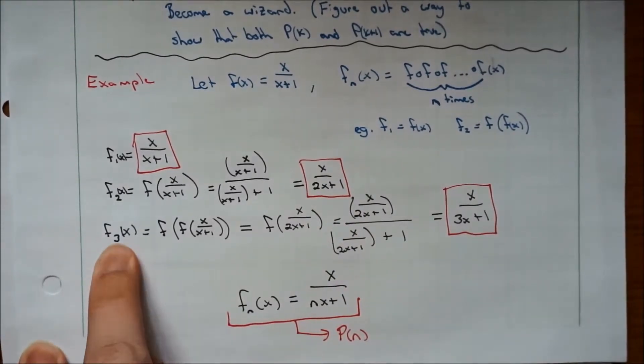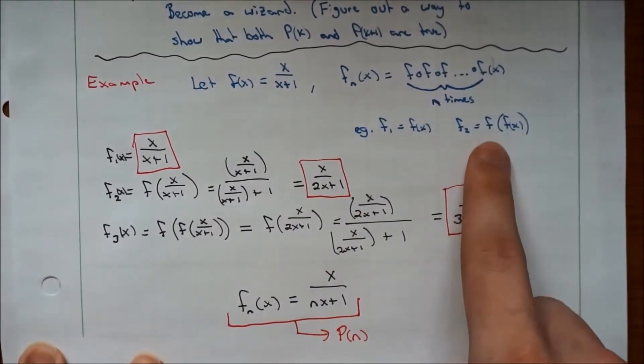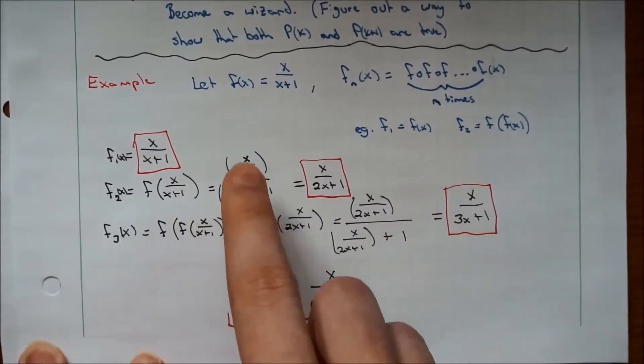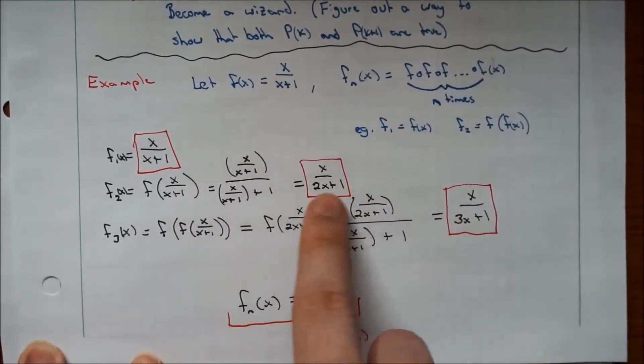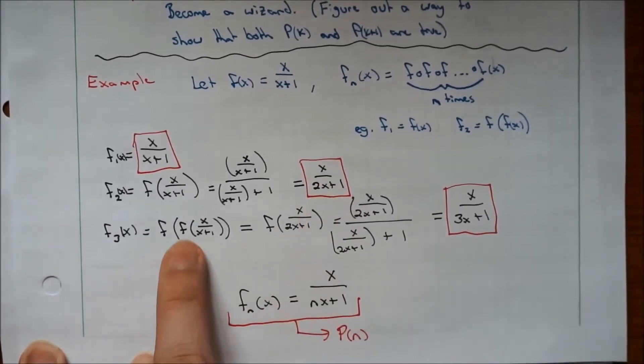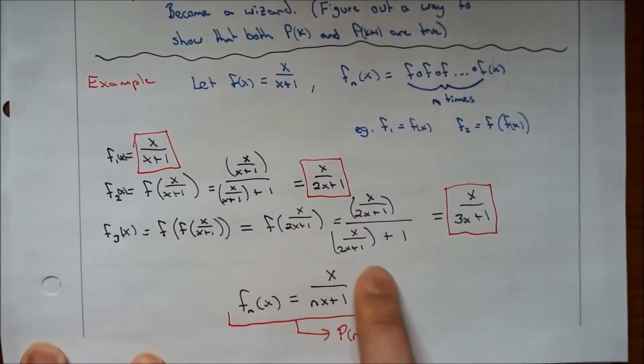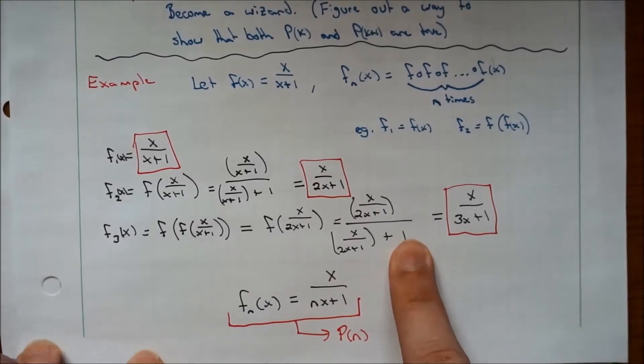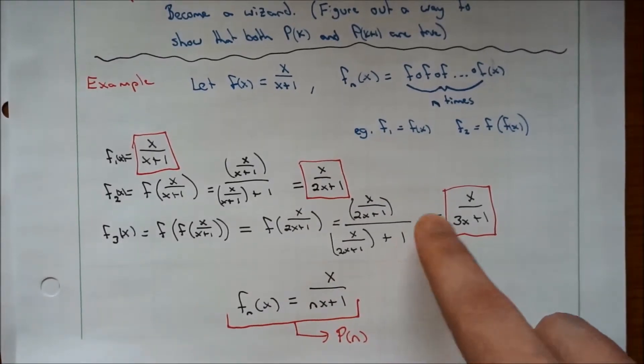Now f_3(x), remember, is just f of f_2(x). So now every time we see an x here, we're going to replace it with what we found in the last one, x/(2x+1). So you put that in there, it gives you this. And if you simplify that out, you'll get x/(3x+1).